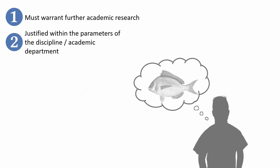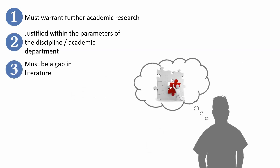Last, but certainly not least, number three: there must be a gap in literature. Many first-time researchers struggle with especially number three. For this reason, here are a few tips to help you narrow your search for a topic and to find the seemingly elusive gap in literature. Just so you know, this process can take several weeks, if not months.